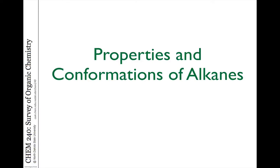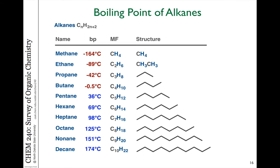In this video, we're going to talk about some of the properties of alkanes and how the shapes and conformations of those molecules affect their properties and reactivity. When we take a look at the linear alkanes, they are different sizes because they have different numbers of carbons and hydrogens. However, the boiling points do change depending on the size of those structures — but it's not just about the size, it's also about the shape.